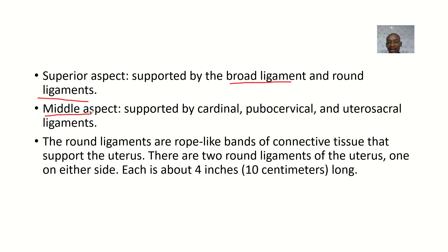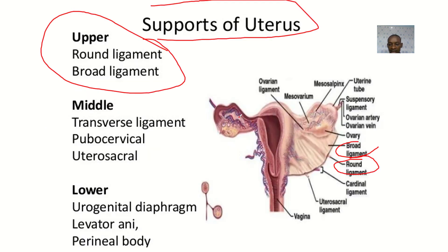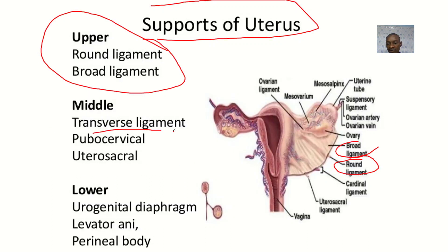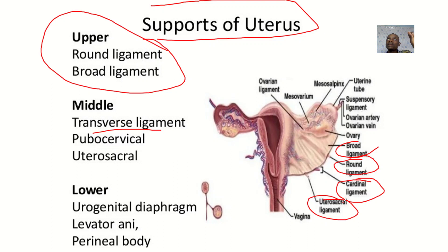The cardinal ligament is also referred to as the transverse ligament. We have the cardinal ligament, the uterosacral ligament, and the pubocervical ligament — which runs from the pubis to the cervix.